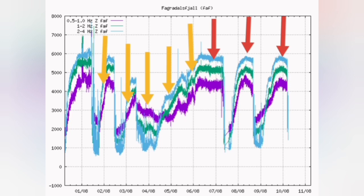Low frequency may be related to water, higher frequency maybe to magma itself. That means the purple, blue, and green parts of the chart — these are movements of the volatiles and the liquid part of the magma.